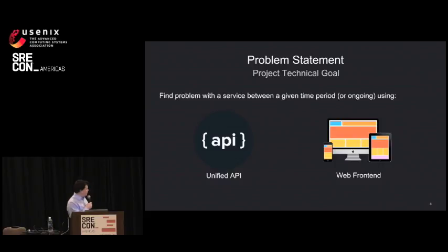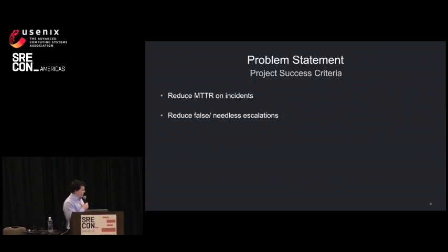And what that comes down to is basically reducing mean time to resolution. My boss gave me this problem statement and said, we want you to provide a unified API that can find the problem with a service in either real time or post hoc analysis after the event. And we want to be able to plug that into our automation systems. We also want a web frontend that allows engineers to visualize the problem so they can do some introspection.